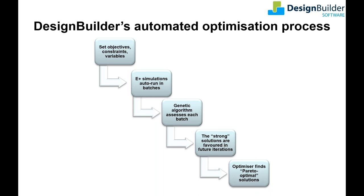Once the optimization starts, it generates input files for EnergyPlus simulations which are run in batches. The genetic algorithm assesses each batch of results to find the strongest solutions, then uses that information to generate future simulation input files specifying the design variable characteristics most likely to generate the strongest results. The whole process is automated and repeated until the optimizer has found all the likely strong solutions in the whole design space. Once the optimizer stops finding optimum solutions, the process stops.